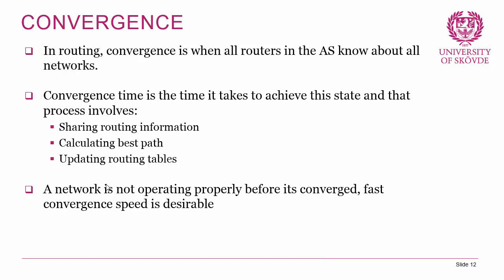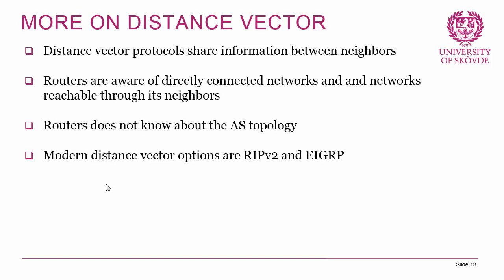With that said, let's go into distance vector routing protocols a little bit more. Distance vector protocols share information between neighbors — routers are aware of directly connected networks and networks reachable through their neighbors. They do not know about the topology of the AS. They include RIP version 2 and EIGRP as the modern options. I don't really see any usefulness in RIP version 2 whenever you have the opportunity to use EIGRP, though the downside with EIGRP is that it's a Cisco proprietary protocol.